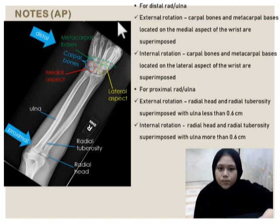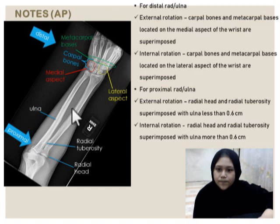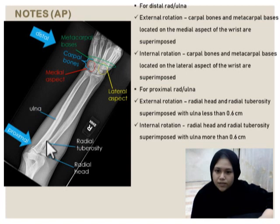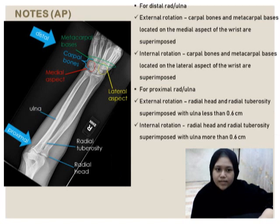For internal rotation distally, carpal bones and metacarpal basis located on the lateral aspect are superimposed. For proximal internal rotation, radial head and radial tuberosity are superimposed with Ulna by less than 0.6 cm. This one is radial head and this one is radial tuberosity. For internal rotation, radial head and radial tuberosity superimposed with Ulna less than 0.6 cm.